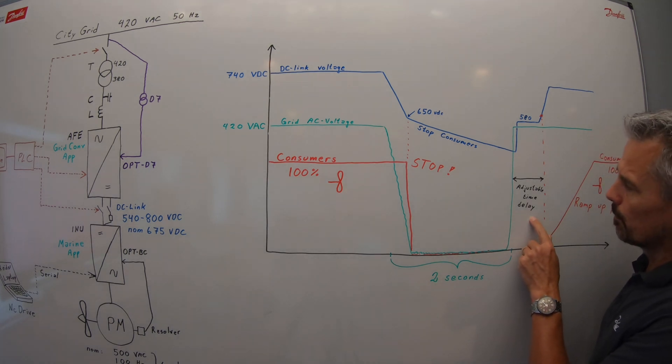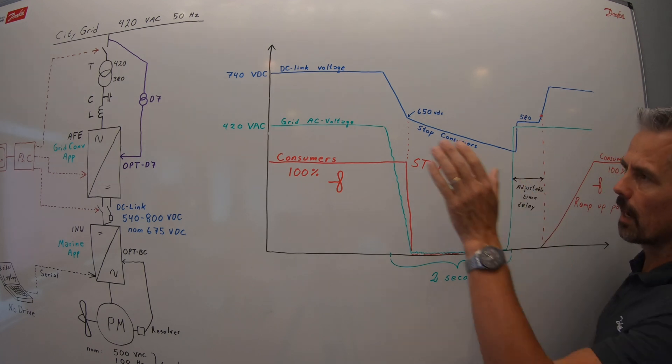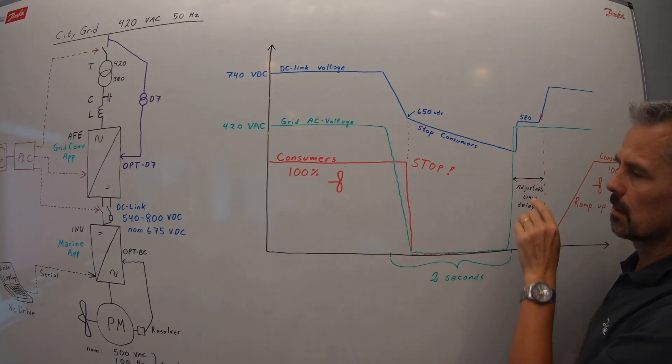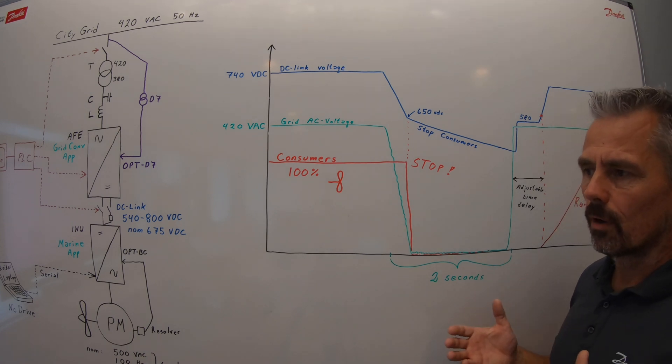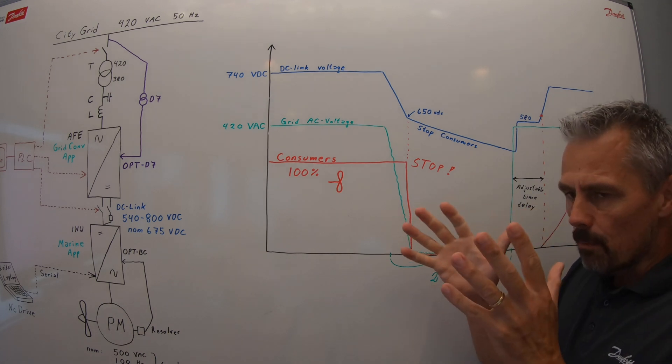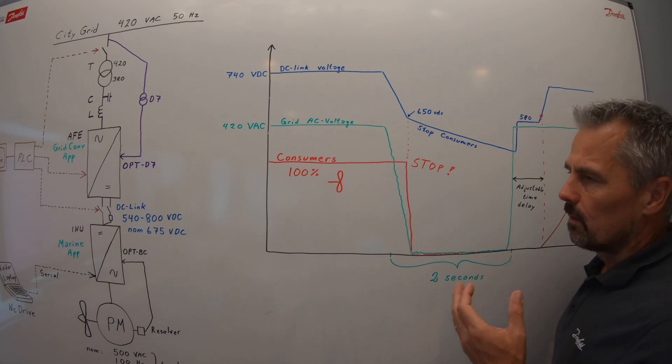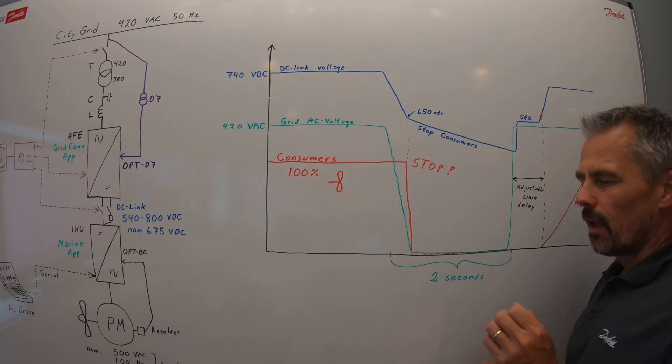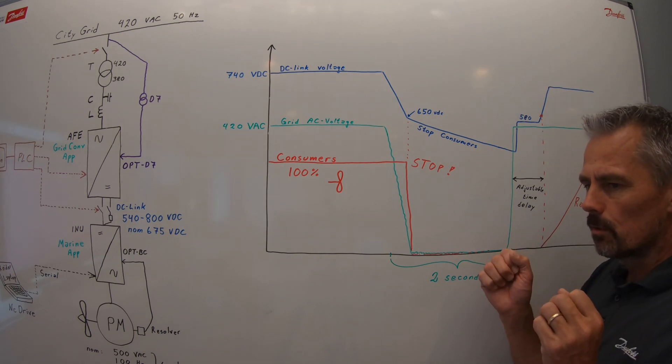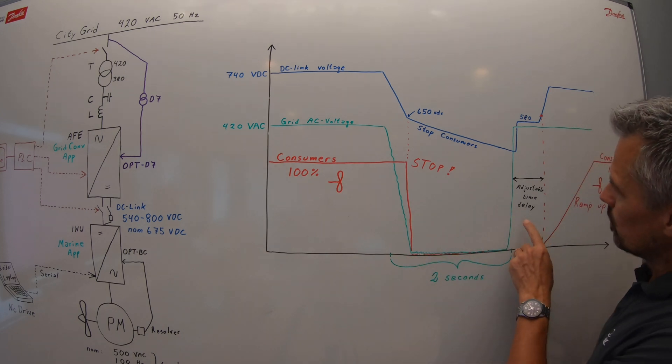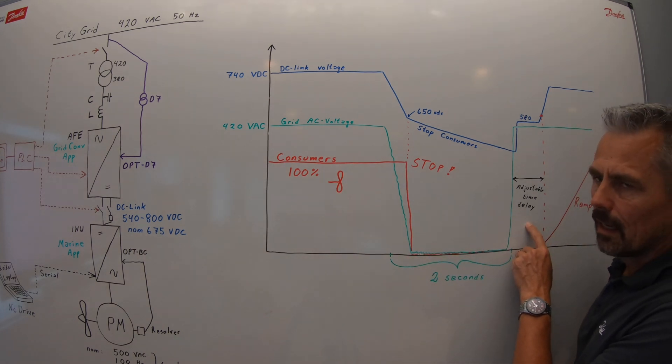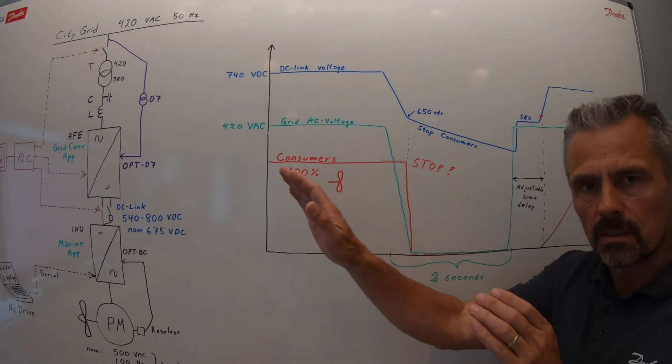And note, there is also an optional, from parameter, adjustable time delay for the active frontend to restart. Why is that? If you have four big propulsion units, you don't want to have them to start on the same time. And the diesel generators and also the grid converters from battery supply will suffer if everybody, all the propulsion units, kicks in at exactly the same time.